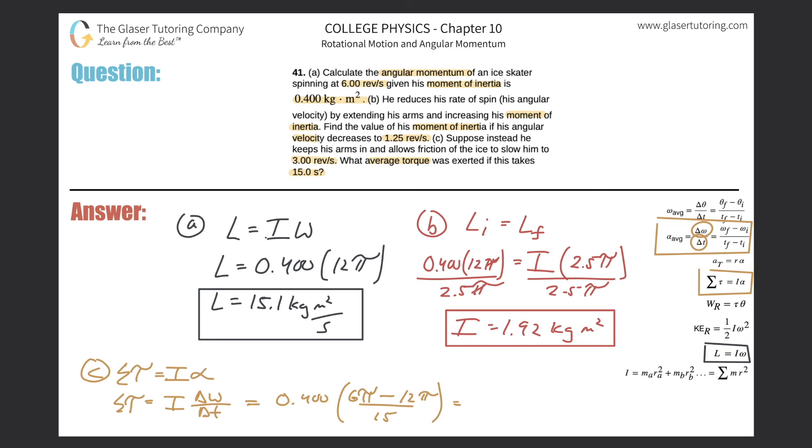And we can just find it. So this is now going to be 0.4 times, in parentheses, 6π minus 12π. And that's going to all be divided by 15.